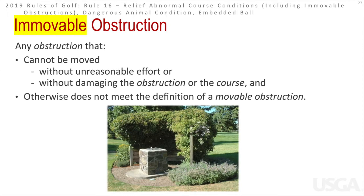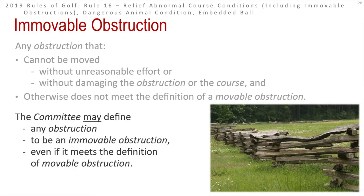An immovable obstruction is any obstruction that cannot be moved — meaning it can't be moved without unreasonable effort or without damaging it. An item could be immovable for one person but movable for another, so it depends on how reasonable it is for that golfer in that situation to move the object. The committee also has the ability to define any object as immovable if they don't want golfers to move it — for example, a historic fence that the committee wants to protect.